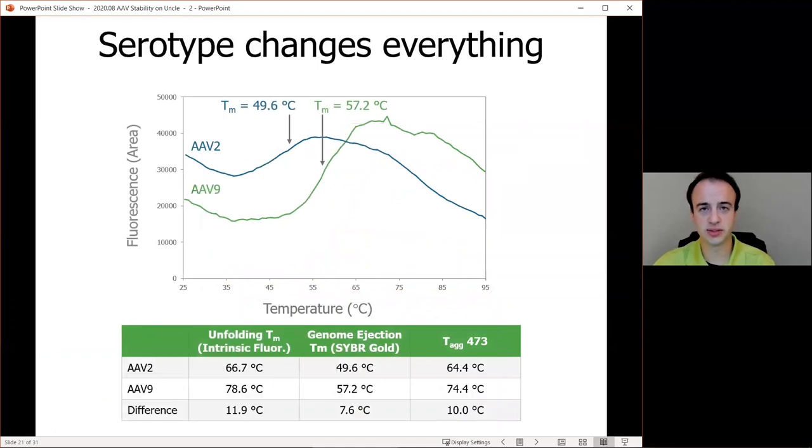And serotype also changes everything with genome ejection behavior. In this case, we're comparing AAV9 that we've seen to AAV2. And we're seeing an 8-degree shift in melting temperature behavior with AAV2 having an onset temperature of about 37 degrees Celsius. So at the bottom, I've also put the temperatures from the unfolding melting temperature from the intrinsic fluorescence, the genome ejection temperature shown in the graph, and the aggregation temperature using the blue laser. And you can see that the difference between the two serotypes is not a consistent value, so we can't just measure one of these and extrapolate. We have to actually measure each of these different behaviors to fully characterize our capsids.